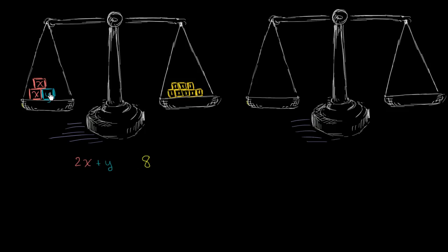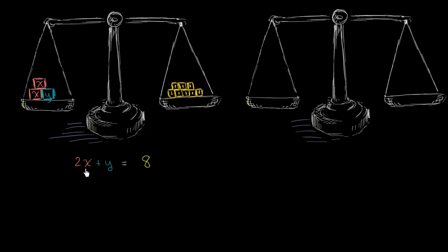Since we see that the scale is balanced, this total mass must be equal to this total mass, so we can write an equal sign: 2x + y = 8. Now, is there anything we can do, just based on this information, to solve for either x or y? Well, with just this information, there is actually very little. If you take a y from both sides, you'd have to subtract y from the other side too — and you don't know what y is. Y depends on x, and x depends on y.